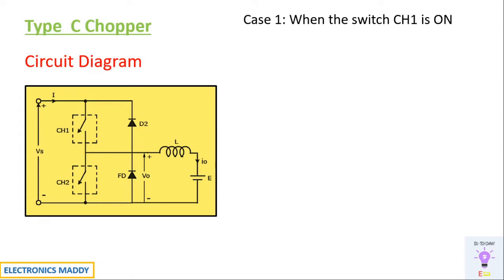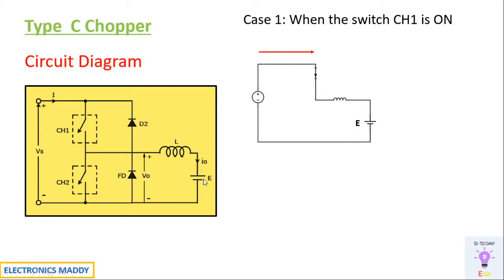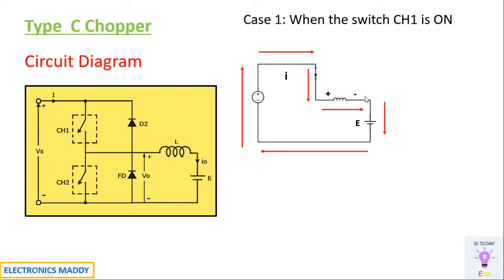Case 1: when the switch CH1 is on, how does the circuit look like? It's very convenient if we draw equivalent circuits so that we can easily analyze them. The equivalent circuit looks something like this when CH1 is triggered. We have to assume that Vs is greater than E, so only then current will flow from the supply voltage Vs to E. Current always flows from higher potential to lower potential. Since Vs is greater than E, current flows in this direction.